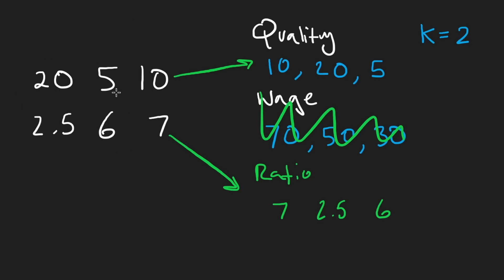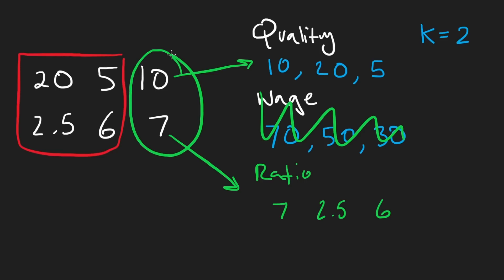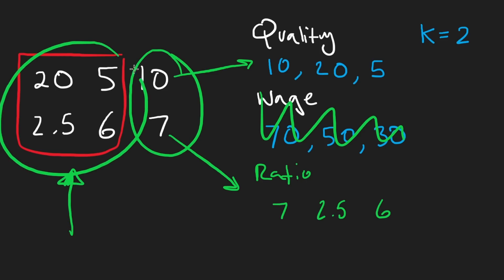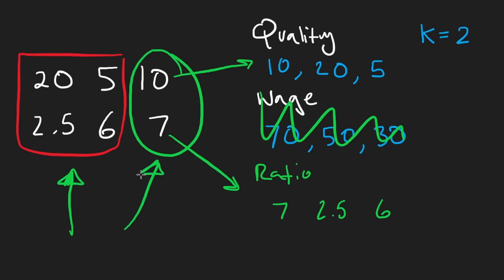But now, as we try to shift our window, we want to introduce another value over here. So either our first guess was correct and we already found the solution, or now we have to keep introducing new values into our set.